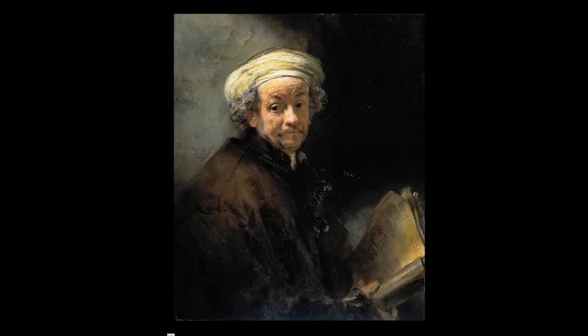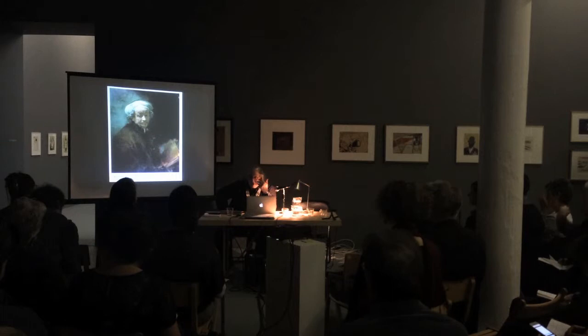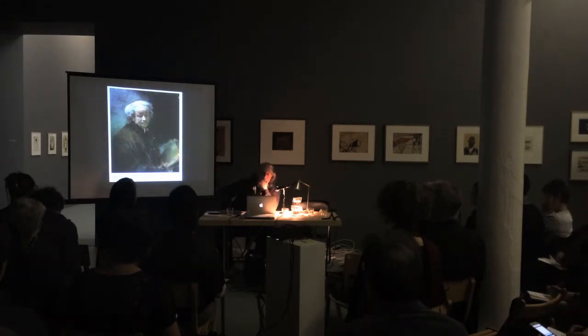Rembrandt's self-portrait as the Apostle Paul, together with the earlier Christian reference, shows the central importance of a kind of Christian model to the notion of portraiture. What the Rembrandt shows is the performance of authenticity — we tend to think of these as terribly authentic portraits, but they're also forms of acting: self-portrait as the Apostle Paul. The 'as' structure is essential here and involves a kind of withdrawal from the performance.